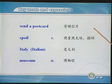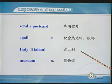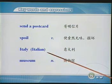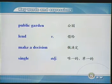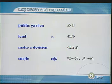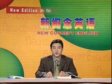Send a postcard. Spoil. Italy — 它的形容词形式是 Italian. Museum. Public garden. Land. Make a decision. Single. OK, now we'll move on to questions on the text.